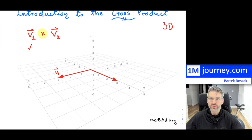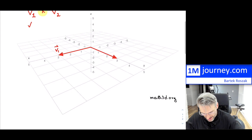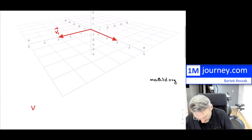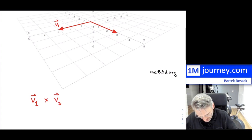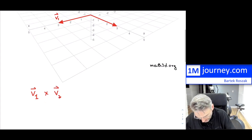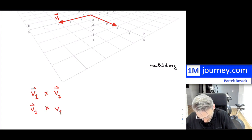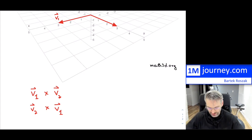When you're doing the cross product, the order — the way that you write these — does actually matter. For example, writing V1 crossed with V2 is actually different than writing V2 crossed with V1. I'm going to give you the subtle difference momentarily.